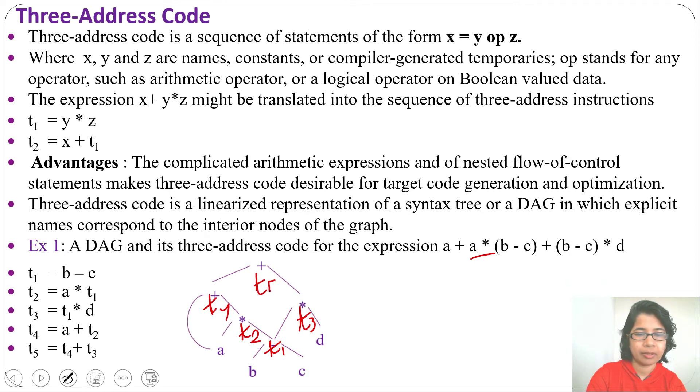This plus stands for T5. You can see how many interior nodes; same number of temporaries we use. There are five interior nodes and here we used five compiler-generated temporaries.